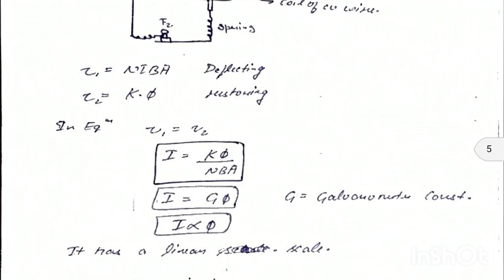Also, I = Gφ, where G = K/NBA is the galvanometer constant. Current I is directly proportional to the angle of twist φ. This gives the galvanometer a linear scale, meaning the deflection is directly proportional to the current flowing through it.